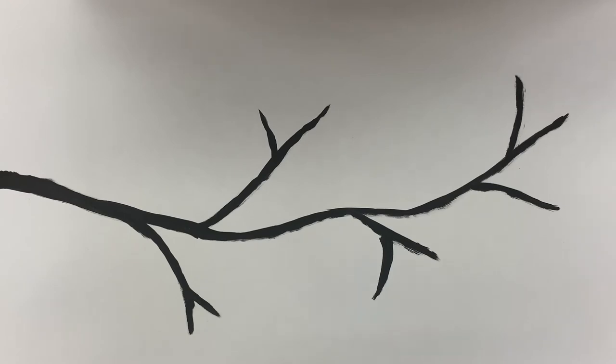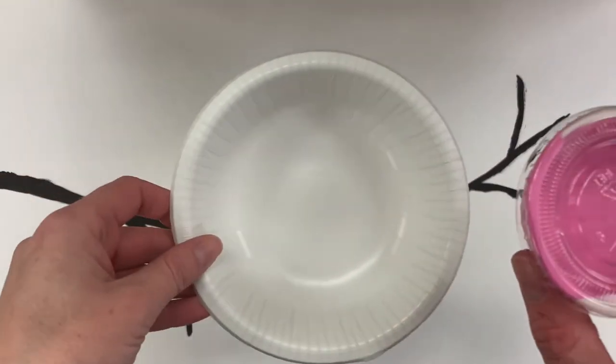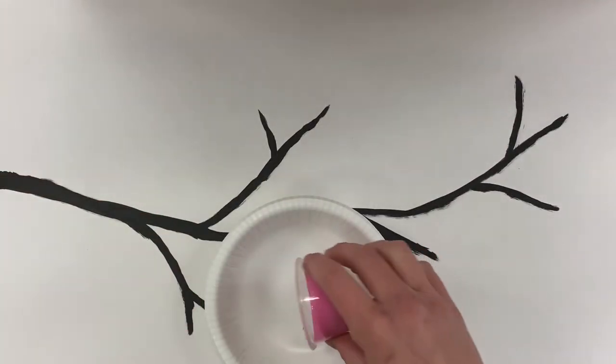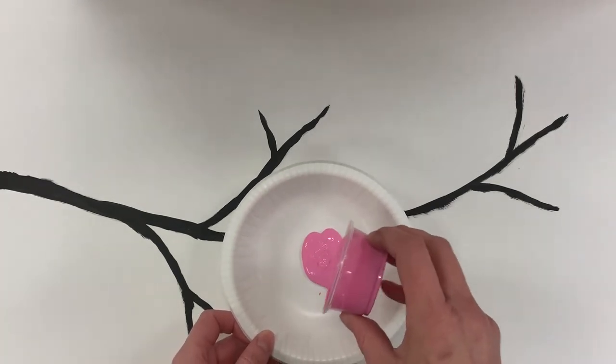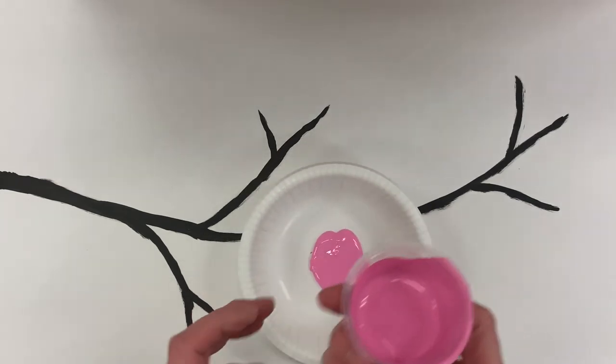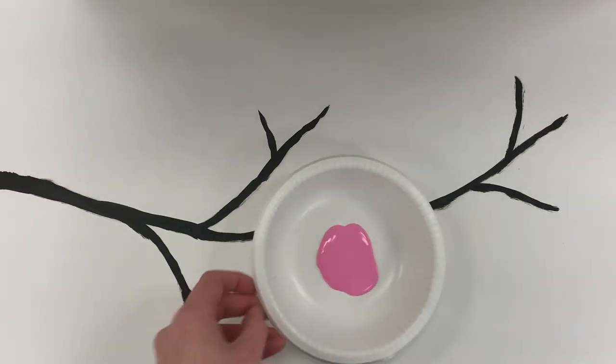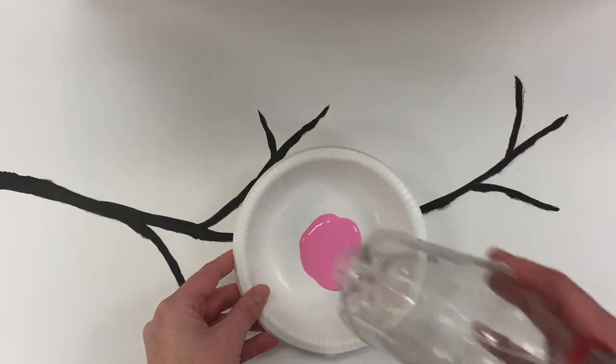Okay, once you have allowed your black paint for your branches of your cherry blossoms to dry, your next step is to take this pink paint that we have provided and pour it into your bowl. And you don't want to do too much right off the bat because you don't want to be putting giant globs of pink paint on here. So start with a little bit, kind of let it spread out. You might even need to use your soda bottle here to sort of help it spread.